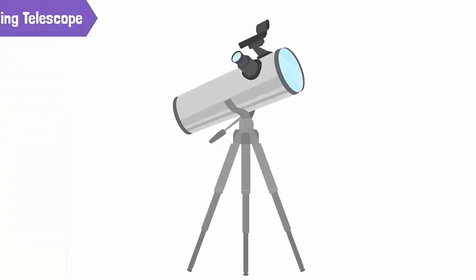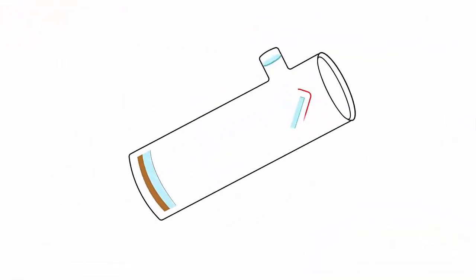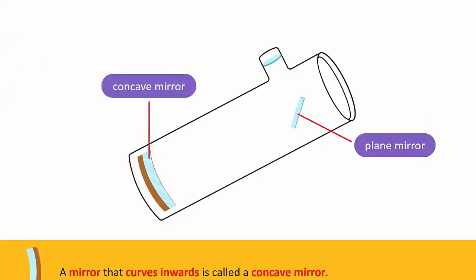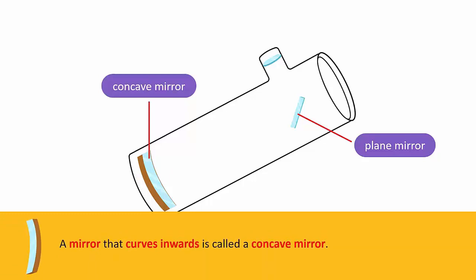This is a reflecting telescope. It contains two mirrors: one is a small plane mirror and the other is a concave mirror. A mirror that curves inwards is called a concave mirror.